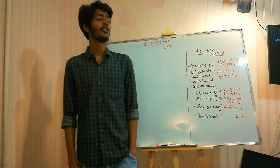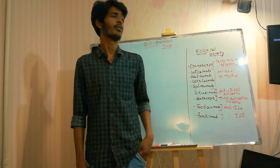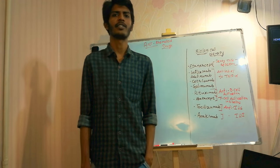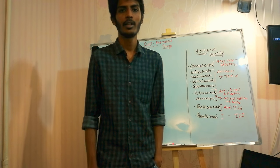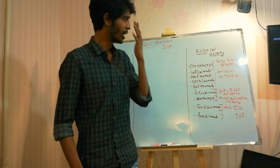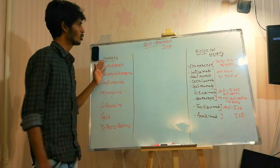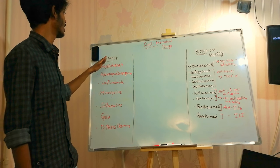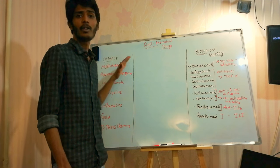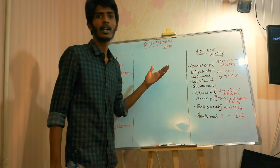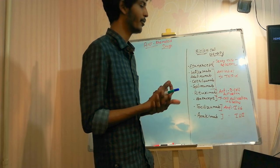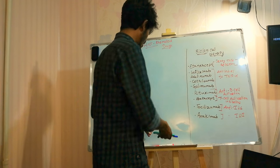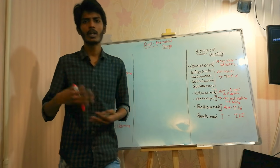Today we'll discuss anti-rheumatoid drugs. These are the group of drugs used in rheumatoid arthritis. I have majorly written about two groups of drugs: biological therapy and DMARDs. We'll discuss how they work, but before that let's understand the basic concept and pathophysiology of rheumatoid arthritis.